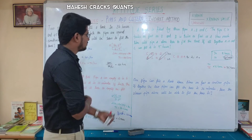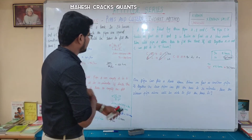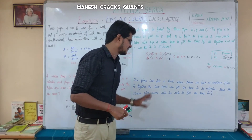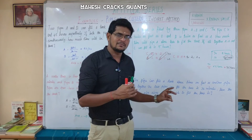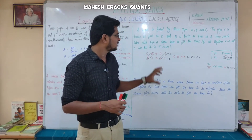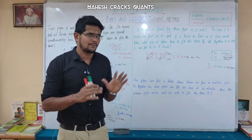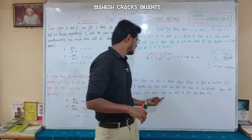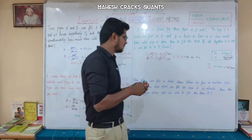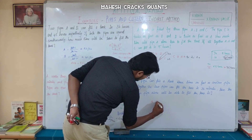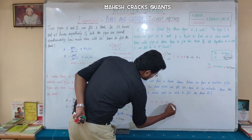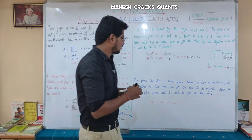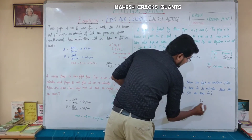Next question: One pipe can fill the tank 3 times as fast as another pipe. If together the two pipes can fill the tank in 36 minutes, then the slower pipe alone will be able to fill the tank in how long? The faster pipe is 3x and the slower pipe is 1x, so together they are 4x, which fills in 36 minutes.